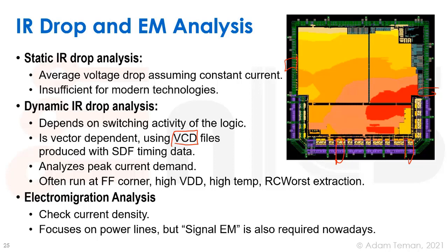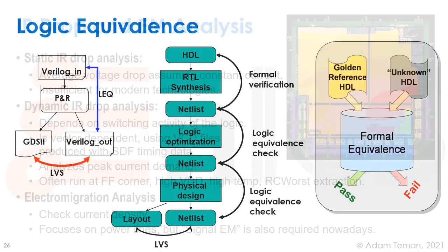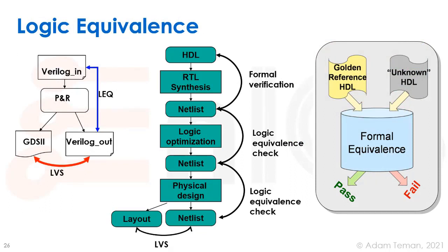We check the current density through the different wires to see if we have any problems and need to make a wider wire. Traditionally, most of the current in a MOSFET-type structure goes through VDD and ground, so this was run only on the rails — the VDD rail, the ground rail, etc. But recently, because of high interconnect scaling and very small interconnects with high current density, we also run signal EM, which checks electromigration problems on signal lines as well.